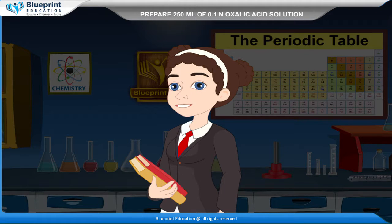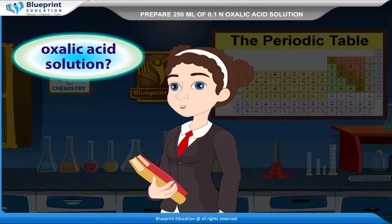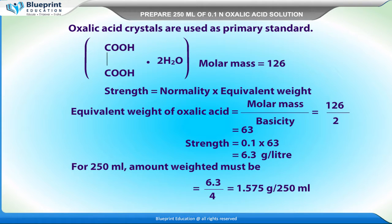A student asks: how can we prepare 250 ml of 0.1 N oxalic acid solution? Oxalic acid crystals are used as primary standard. COOHCOOH·2H₂O has molar mass 126. Strength equals normality into equivalent weight. Equivalent weight of oxalic acid equals molar mass upon basicity, equal to 126 by 2, equal to 63. Strength equals 0.1 into 63, equal to 6.3 gram per litre.